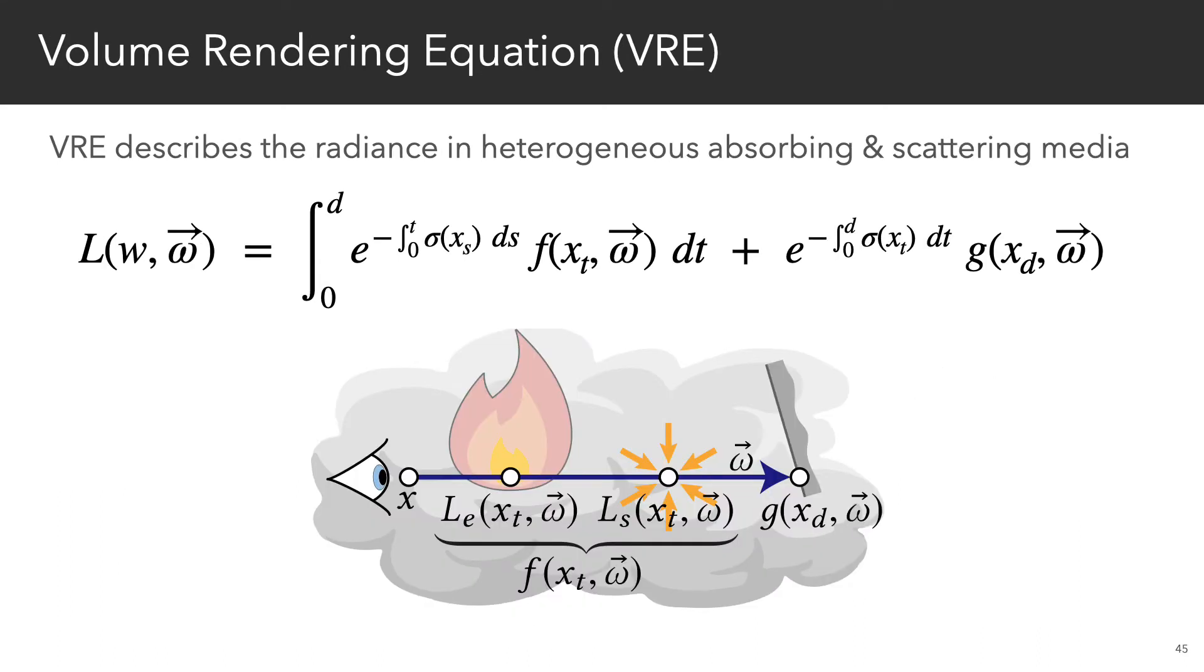we then observe that the Feynman-Katz formula actually looks a lot like the volume rendering equation, which in computer graphics describes the radiance L along a ray in a heterogeneous medium that absorbs, scatters, and emits radiation.